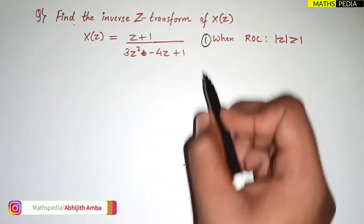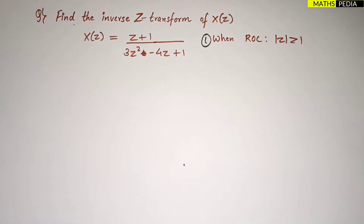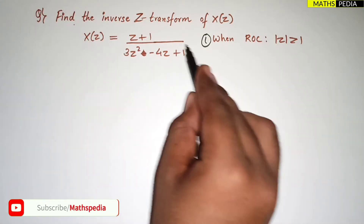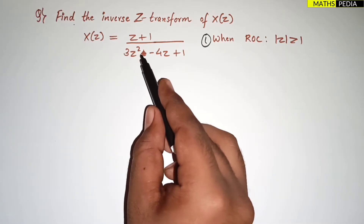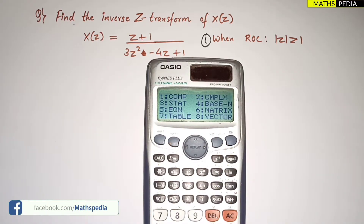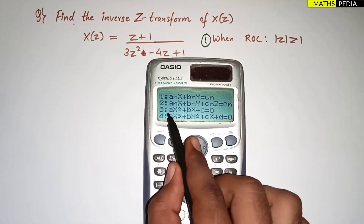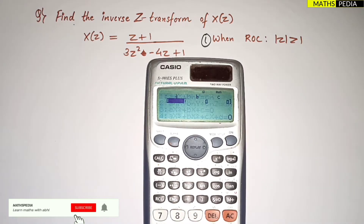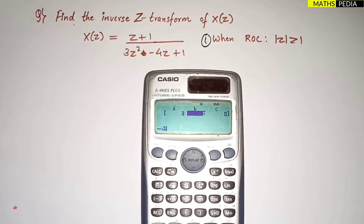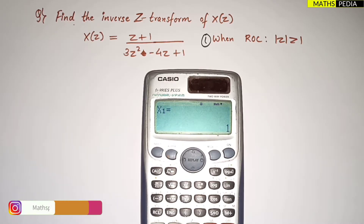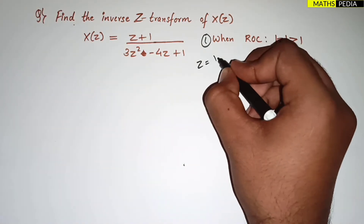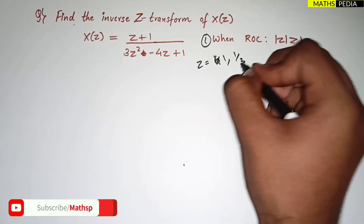The first step is to check whether the powers of z are positive or negative. Since the power is positive, we proceed to the next step: simplifying the denominator. Since it is quadratic, we bring it to linear factors by splitting the middle term or using a calculator. Go to Mode 5, then option 3 for ax² + bx + c = 0. Enter coefficients 3, -4, and 1 to get roots z = 1 and z = 1/3.